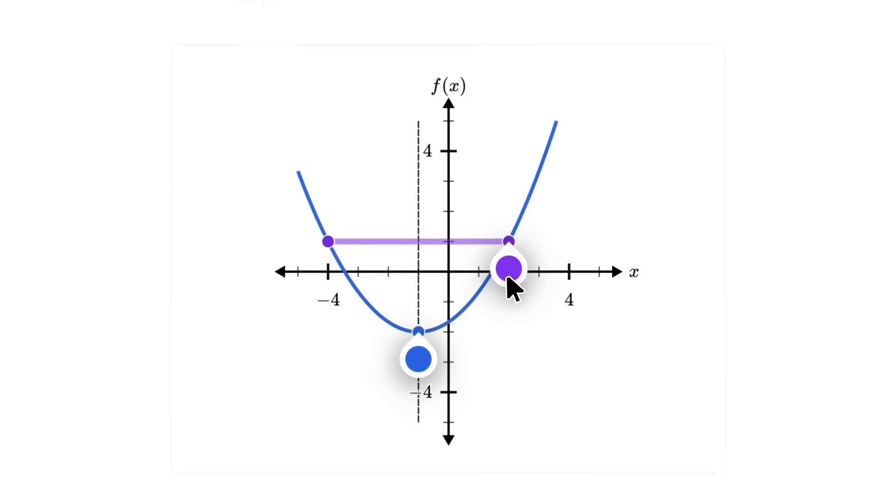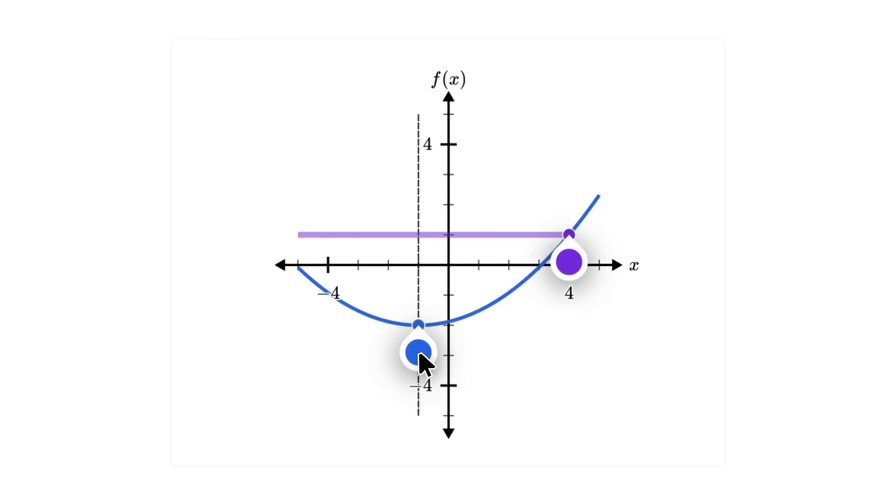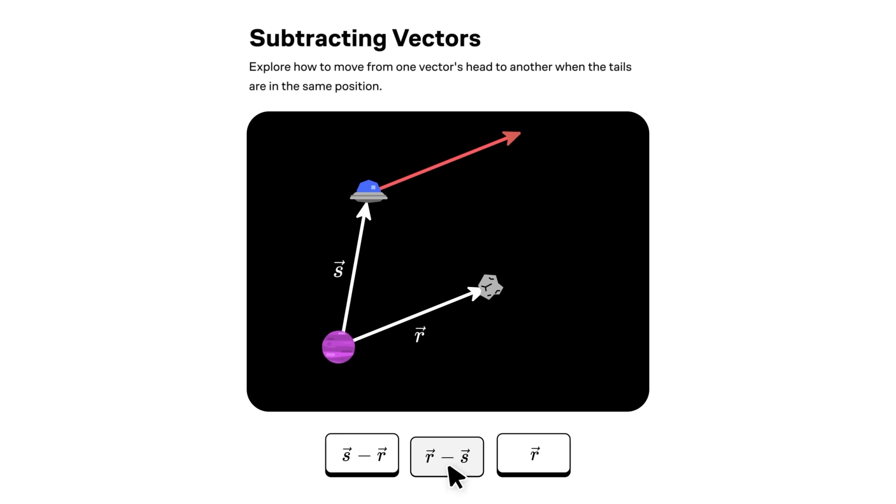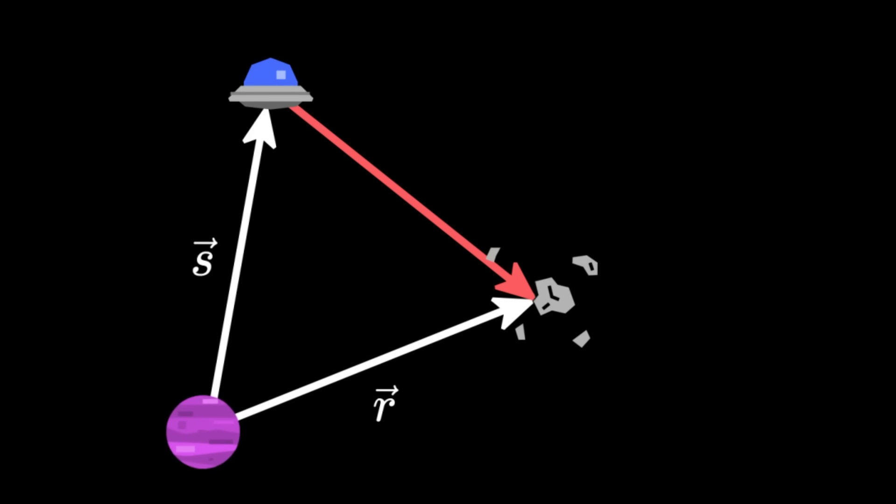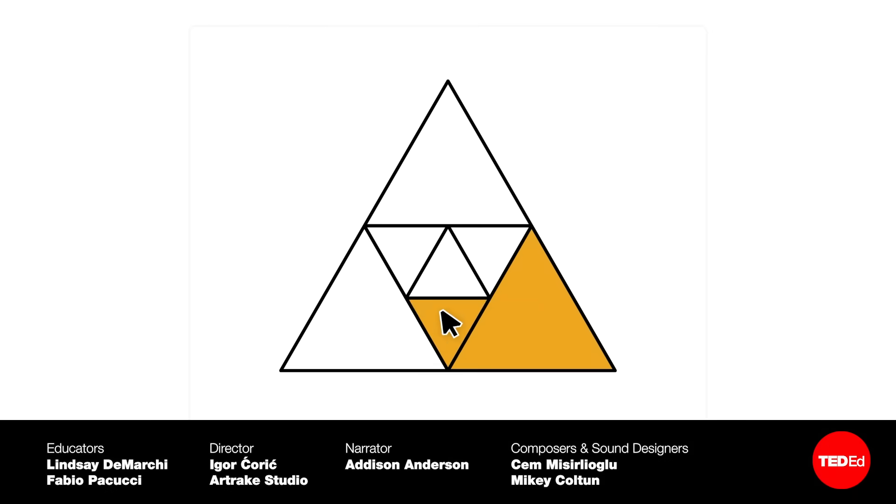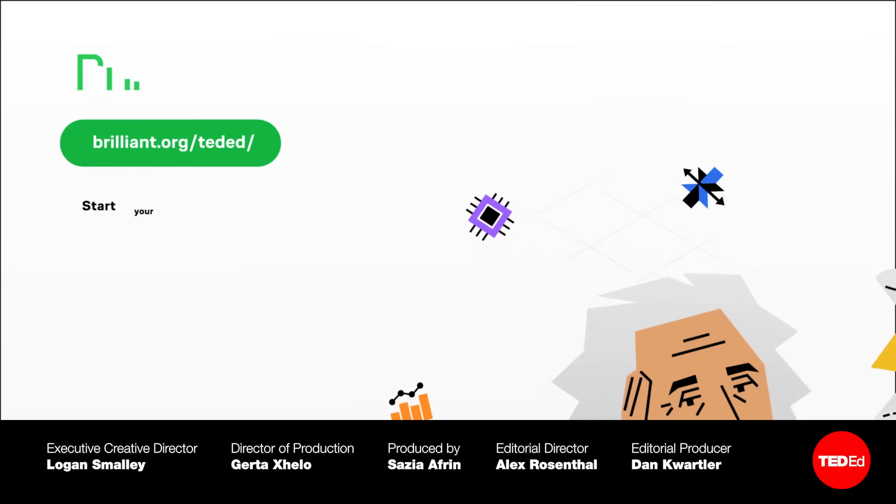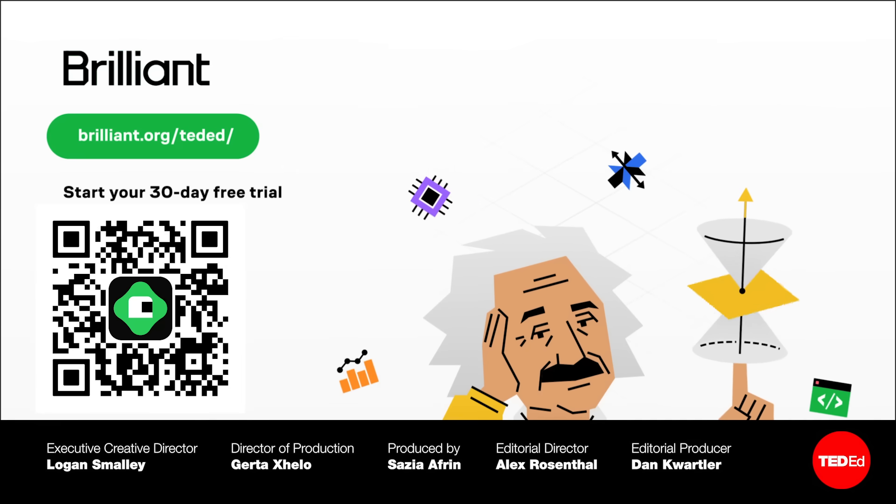Here's an easy way to prepare for a time-traveling conversation with Einstein. Go to Brilliant. Brush up on mathematical and scientific concepts through their interactive lessons, covering everything from geometry, coding, algebra, and more. Visit Brilliant.org slash TedEd for 30 days free and 20% off a yearly subscription.